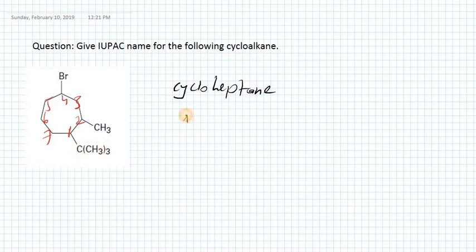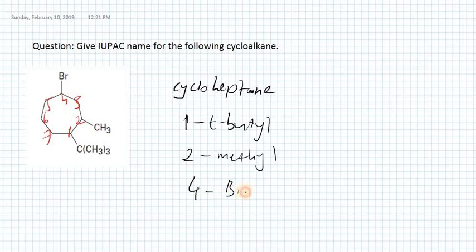So let's write here. At the first position we have t-butyl, at the second position we have a methyl group, and at the fourth position we have a bromine, or a bromo substituent around the ring.